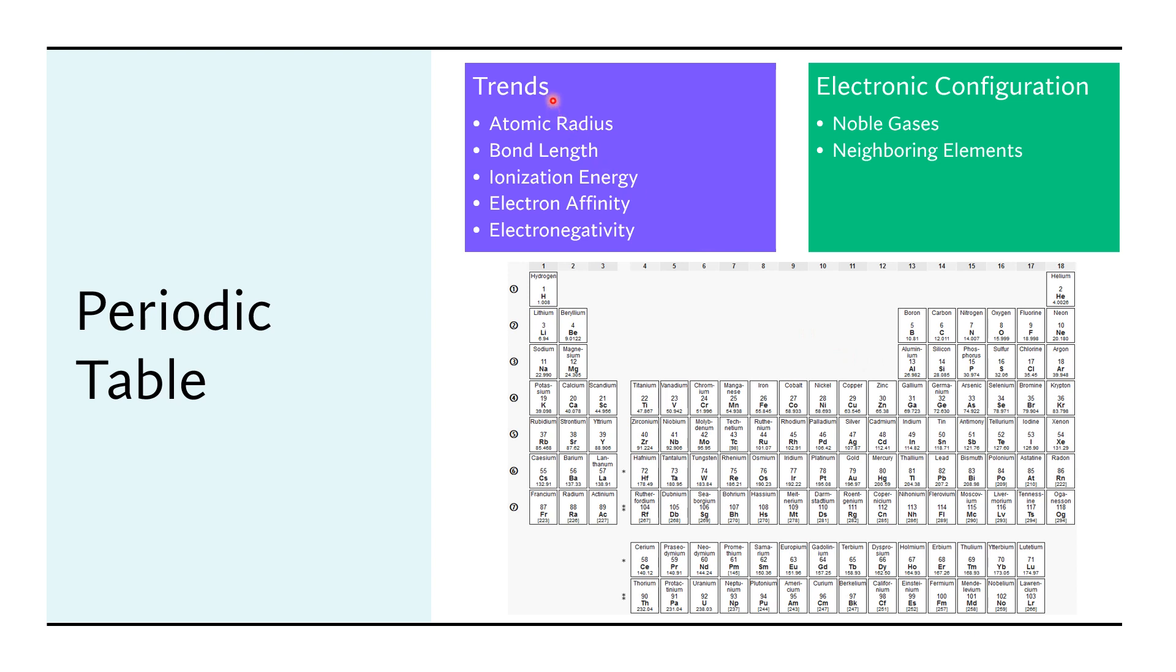So as important as memorizing the arrangement of the elements in the periodic table is actually understanding the trends in the periodic table. So these trends are very important. Understanding how the electron configuration actually progresses as you go through the periodic table, it's very important.